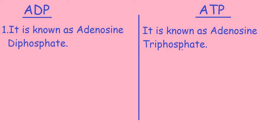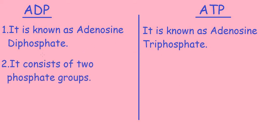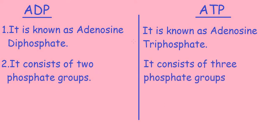Moving on to the second point: ADP consists of two phosphate groups, whereas ATP consists of three phosphate groups.